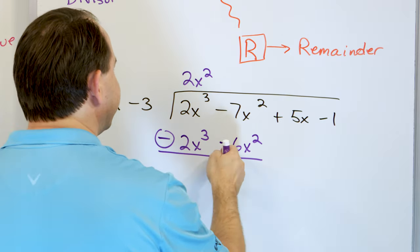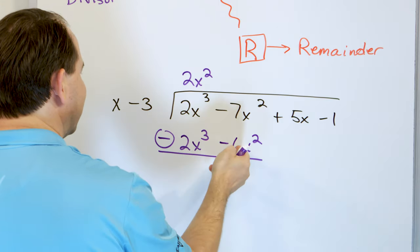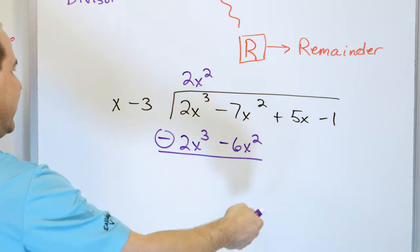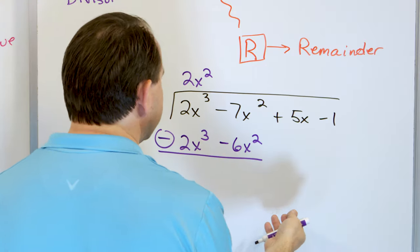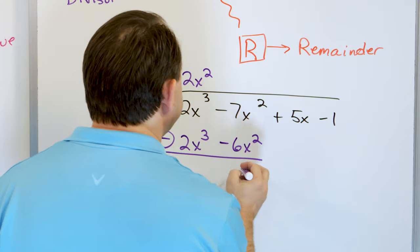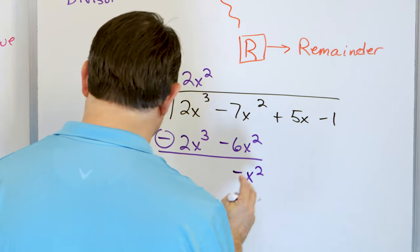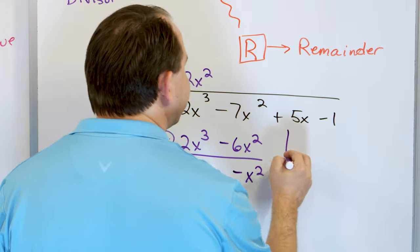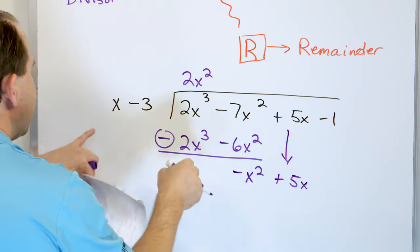Negative 7 minus a negative 6 means negative 7 plus 6, and that's going to be negative x squared. Then I take and drag my next term down. x times what gives me negative x squared? It's got to be negative x.